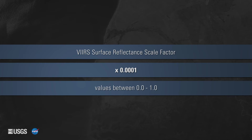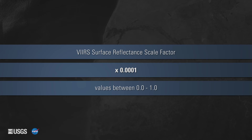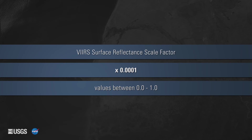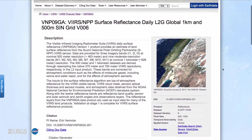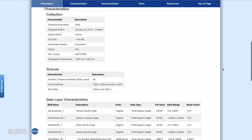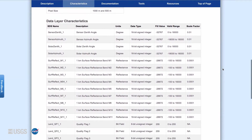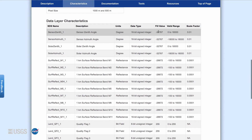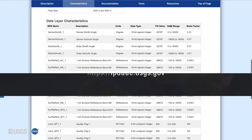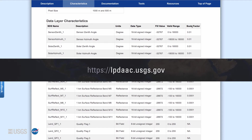It is important to know that before you begin using the data, a scale factor must be applied to surface reflectance data values. For VIIRS surface reflectance products, a scale factor of 0.0001 should be applied to the surface reflectance bands, resulting in data values typically between 0 and 1. Data values that fall outside this range are considered fill values. To learn more about the specific scale factors, fill values, and valid ranges for the various surface reflectance product layers, please see the DOI landing pages on the LPDAAC's website at lpdaac.usgs.gov.